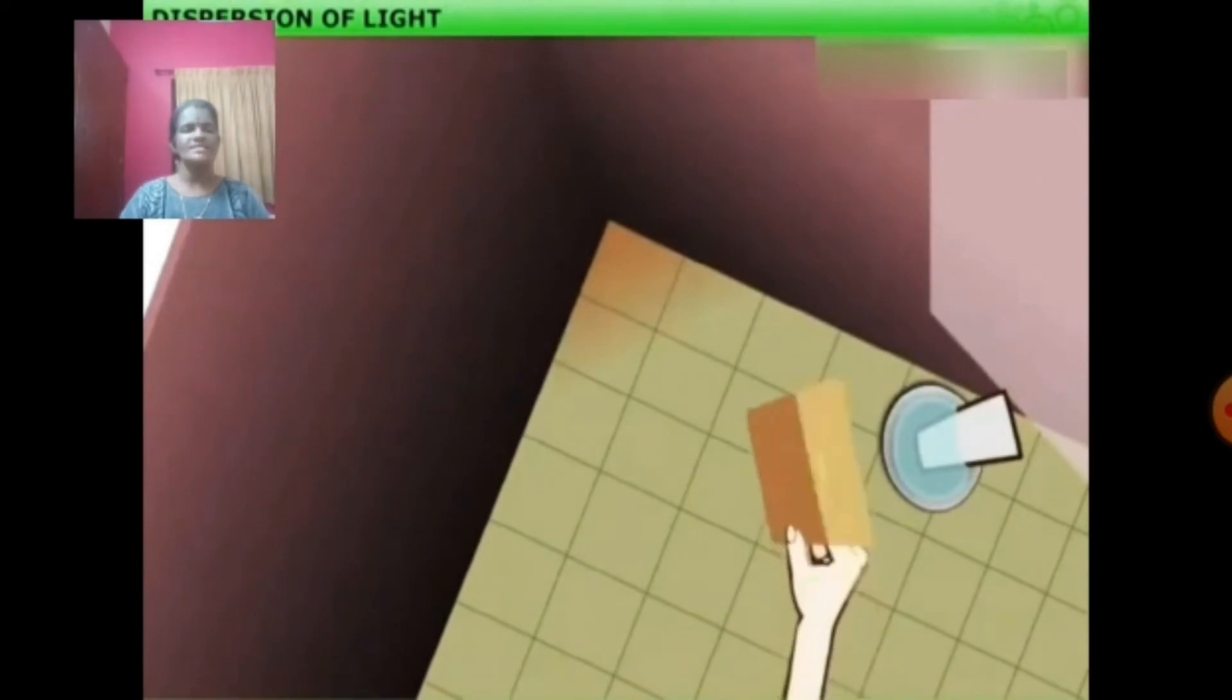Then place this arrangement near a window so that direct sunlight falls on the mirror strip. You can take a cardboard with a slit so as to get a beam of incident light. Then adjust the bowl such that you will get reflected light on the white wall. If the wall is not white, you can place or stick a piece of white paper on the wall so that the spectrum of light can be seen on the wall.